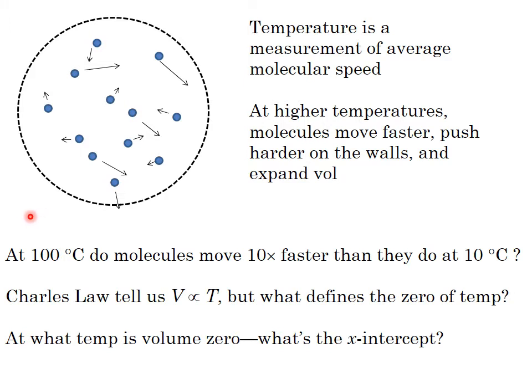What Charles started to think about was really how you might think about this in terms of the volume of a gas. So in order to make this sort of absolute comparison, to say that they're moving 10 times faster, you could extrapolate and think about, well, what's the temperature at which the volume of a gas is zero?